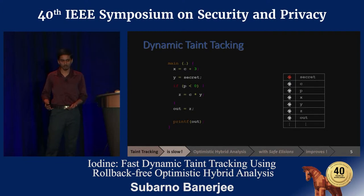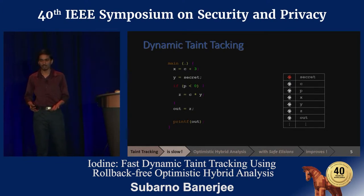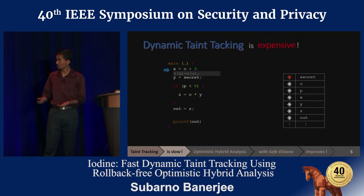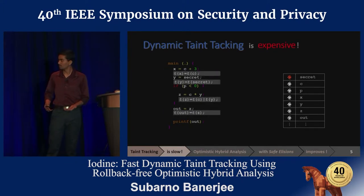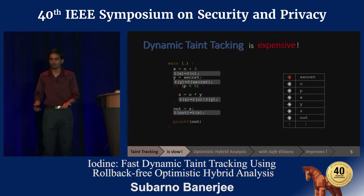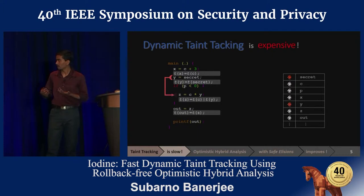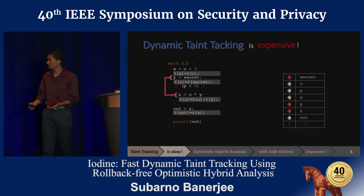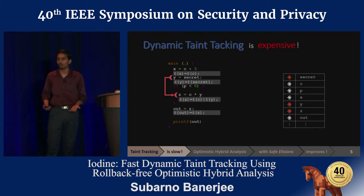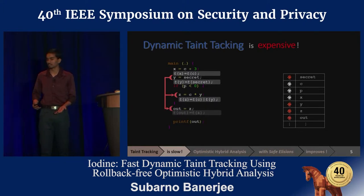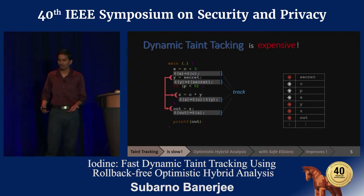A naive dynamic monitoring approach would have to instrument each instruction to look up the taint of its operands, compute the taint propagation, and then modify the taint state. In our example, for the first instruction x equals c plus 3, we monitor taint of x equals taint of c, and constants are never really tainted. Secret is a taint source, and for the assignment y equals secret, we explicitly transfer the taint of secret to taint of y. Inside the if block where we compute z as c multiplied by y, we monitor taint of z equals taint of c or taint of y, meaning z can be tainted by both c and y. And again, for the assignment, we explicitly transfer the taints.